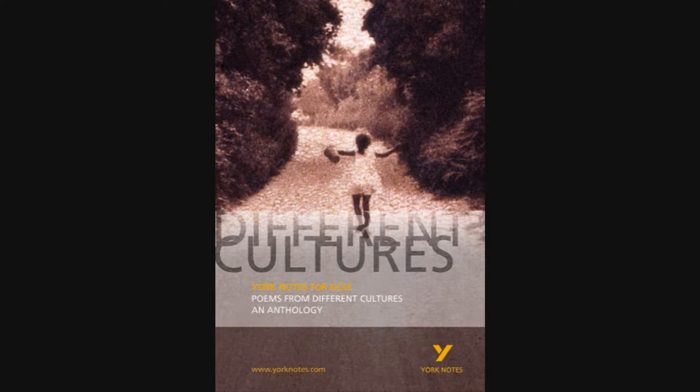Now, that's a very quick version — you'd have to write a bit more than that. You'd also have to compare it with the other poem. You can compare the two poems as you go along. If you were writing about the first point, you'd add that in Blessing the place is very different — it's very dry, but also full of life when there is water. You don't have to compare as you go along; you can write the bullet points about the first poem and then compare it with the second.